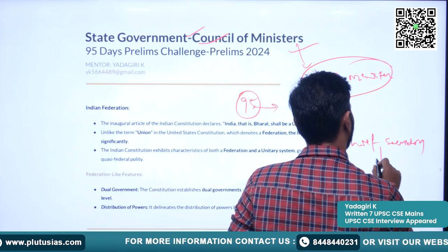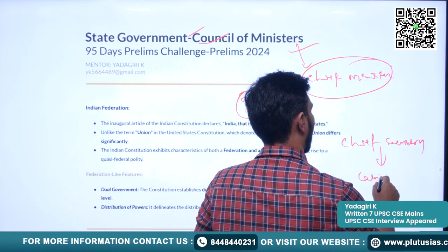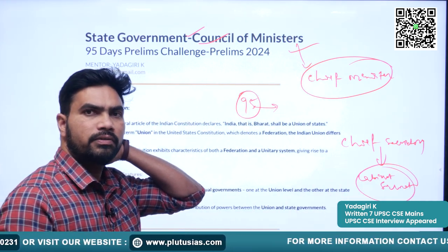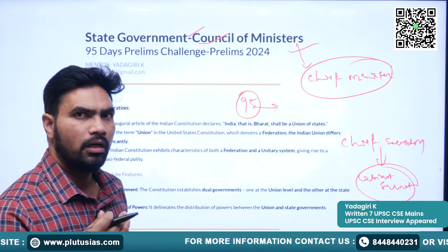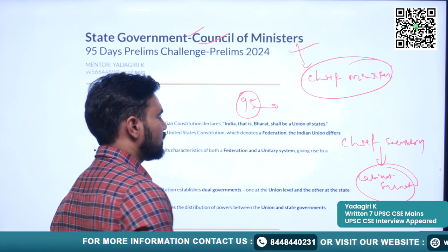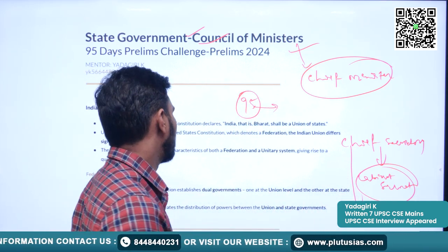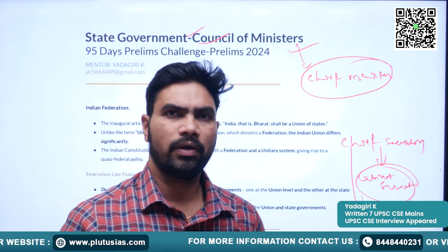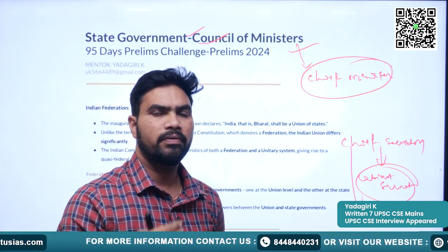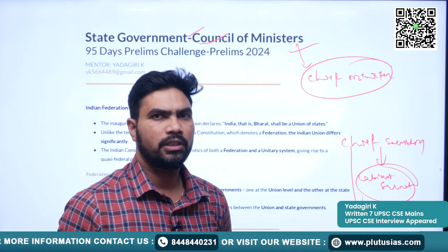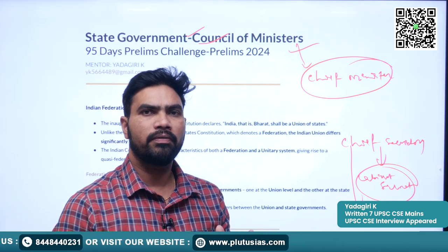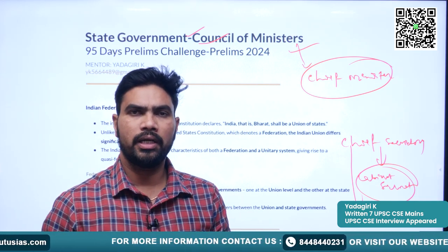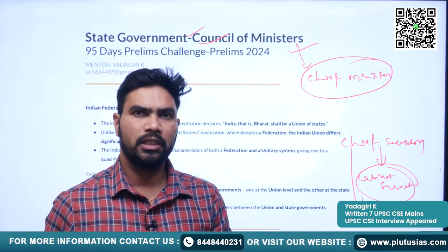The position of chief secretary is akin to the cabinet secretary at the central level. Similarly, we have a chief secretary at the state level to assist the council of ministers. Before directly going into the topic of state government, we will try to understand the administrative arrangement between the center and states, so we can better understand the administrative structure at the state level.